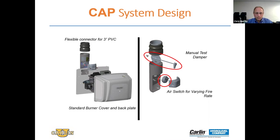The connector piece is a soft rubber connector that transitions from four inch to three inch and provides a tight seal, so we can maintain the seal from the intake piece directly to the outside termination piece. The outside termination piece comes in the kit. It consists of a 90-degree elbow, a screen — a critter screen, quarter-inch mesh — and it connects to the PVC pipe going back to the burner.